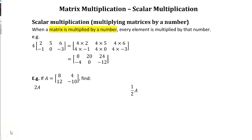Let's start talking about how we multiply matrices. First we're going to look at scalar multiplication — this is when we multiply a matrix by a number. It can be a whole number, it can be a fraction, whatever. When a matrix is multiplied by a number, every element within the matrix is multiplied by that number.